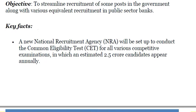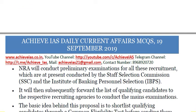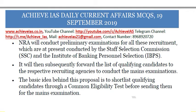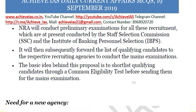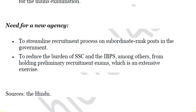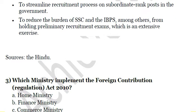The National Recruitment Agency will be set up to conduct a Common Eligibility Test (CET) for various competitive examinations in which an estimated 2.5 crore candidates appear annually. It will conduct preliminary examinations for all recruitments currently conducted by SSC and the Institute of Banking Personnel Selection — UPSC is not under its ambit. It will then forward the list of qualifying candidates to the respective recruiting agencies for the main examinations. The basic idea is to shortlist qualifying candidates through a common eligibility test before sending them for mains, reducing the burden of SSC and IBPS from holding preliminary recruitment exams.